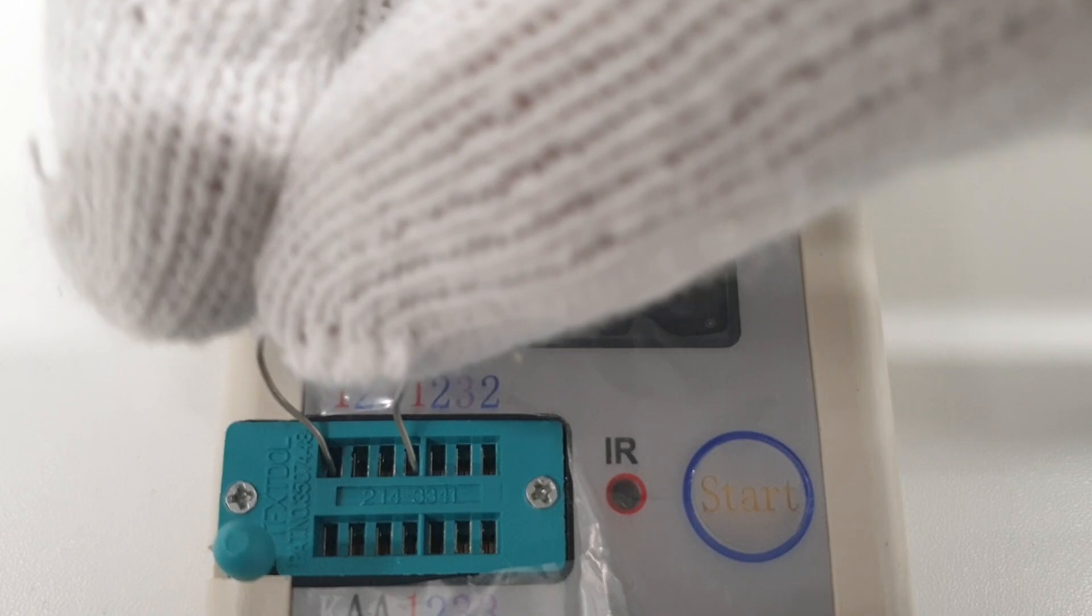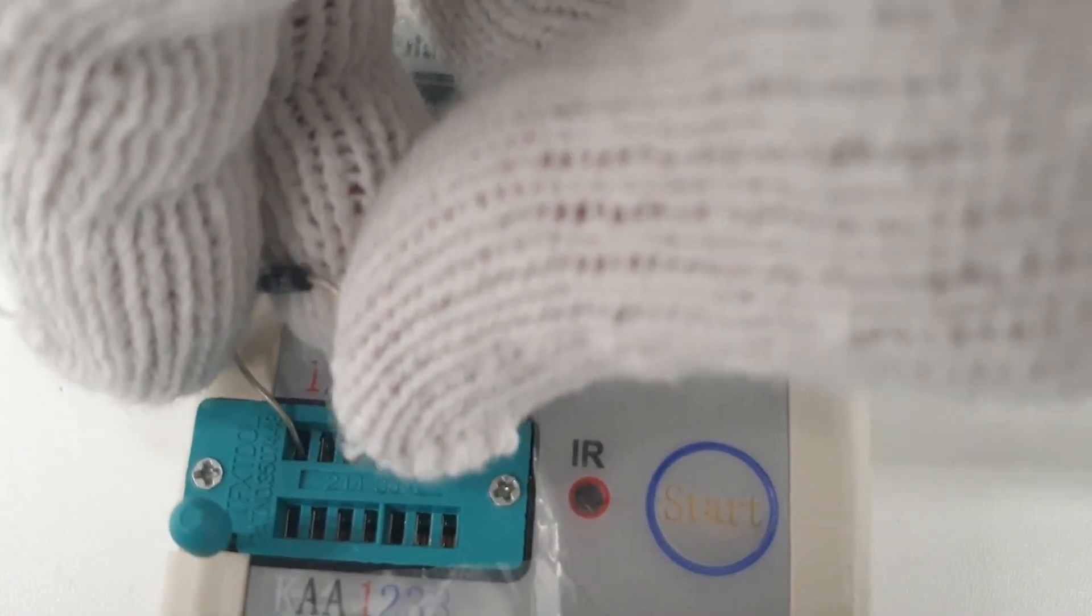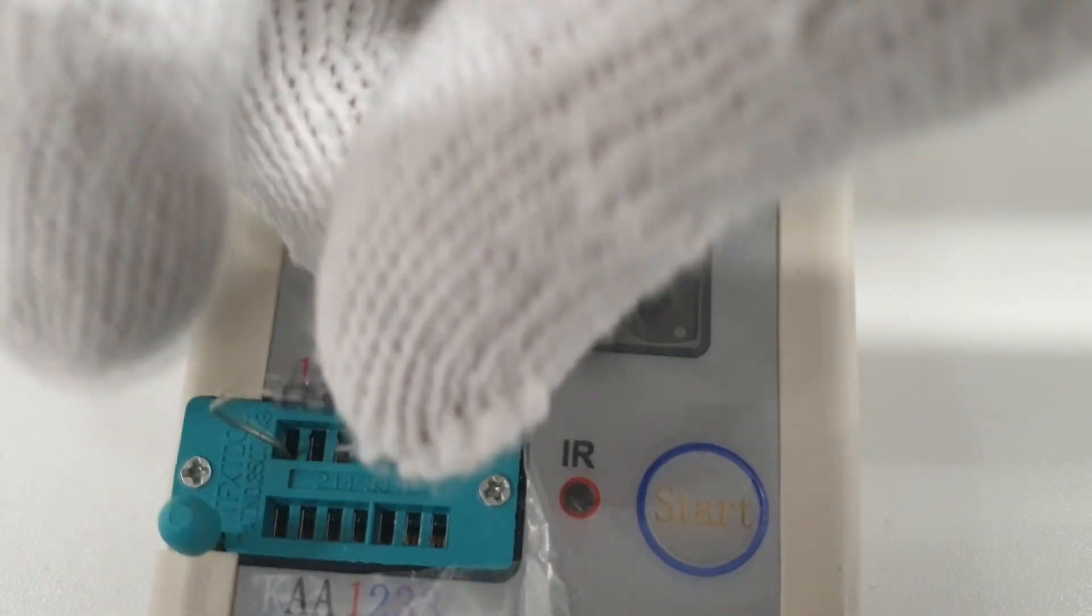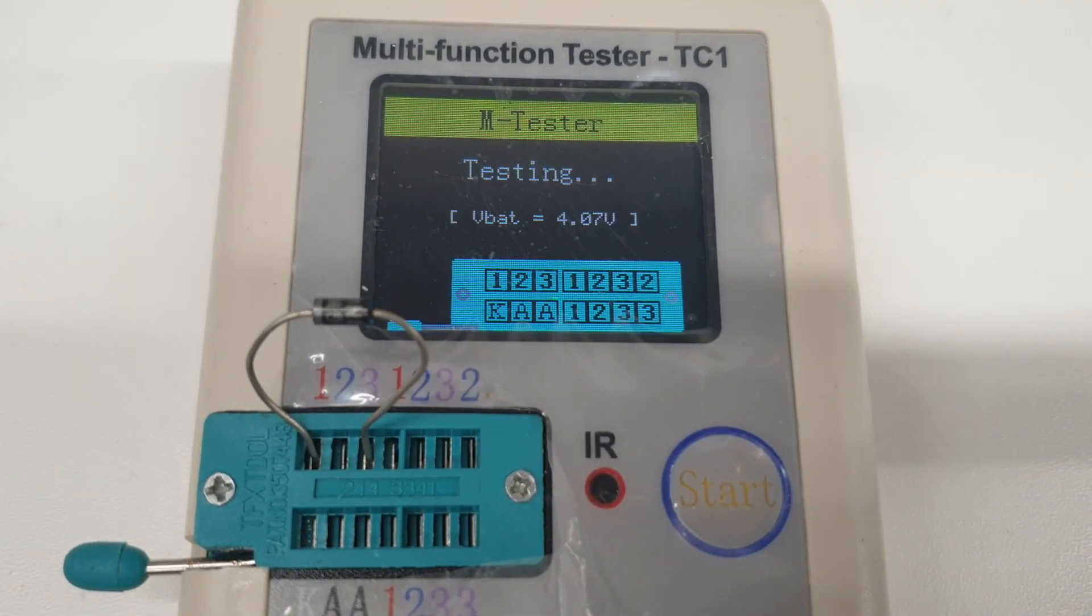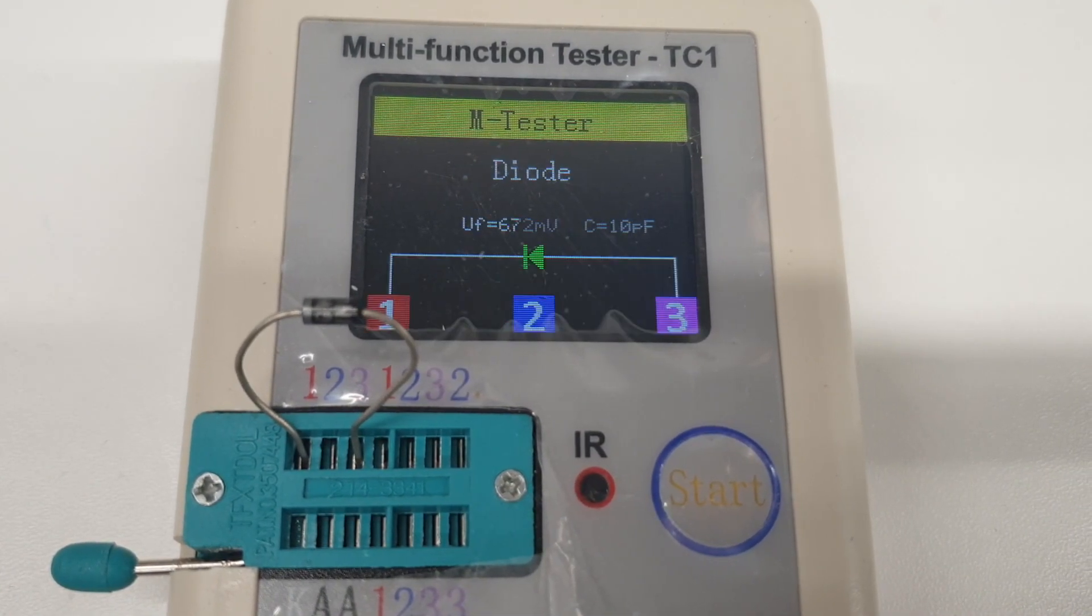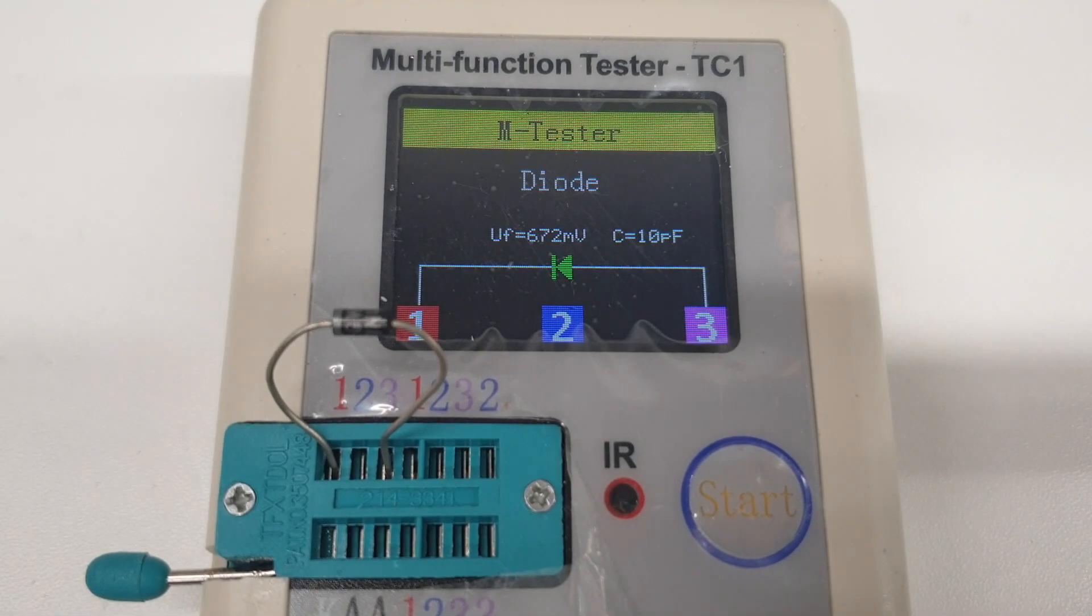The other thing is diodes. Let's see what is this one. So it even tells you the capacitance - it measures the capacitance of the diode to 10 picofarads. But when I put the 22 picofarad capacitor, it was not measuring it. Okay, I don't know, let's see.